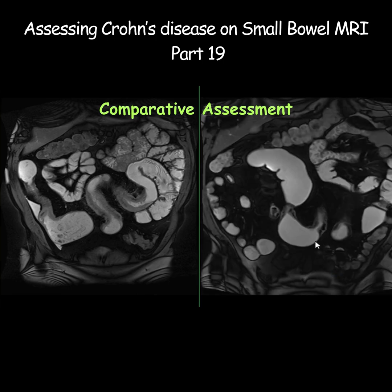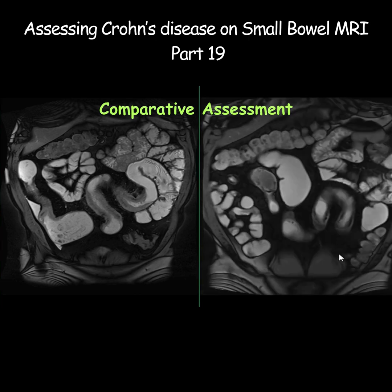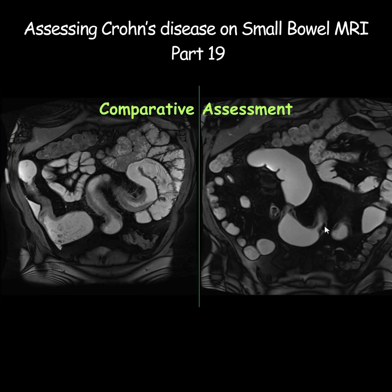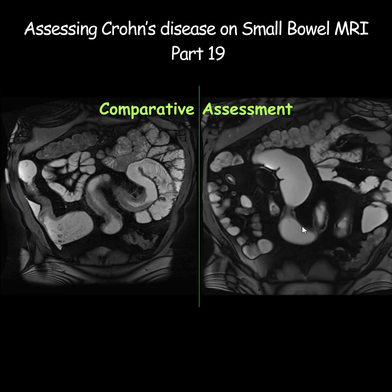Look at this structure. There is significant low T2 signal in the wall, which could either be due to fat — because it's a fat-suppressed sequence — or fibrosis. There is no significant bowel wall edema, there is fat hypertrophy but no significant vascular engorgement and no significant lymph nodes. So this was more fibrous stenotic.